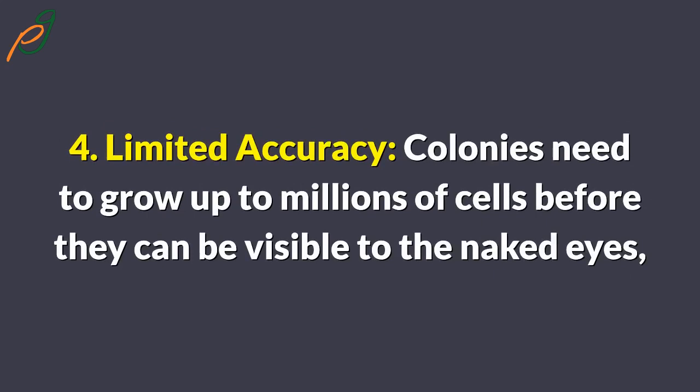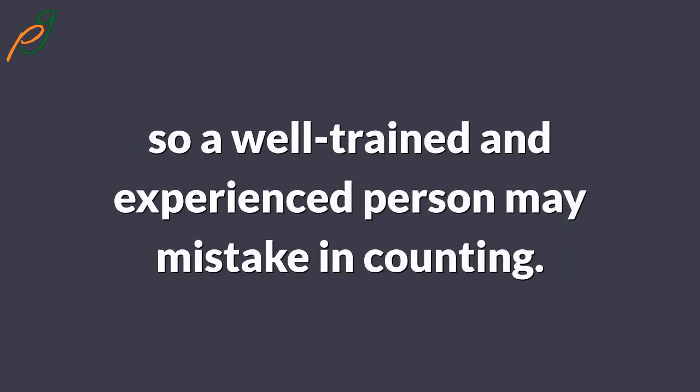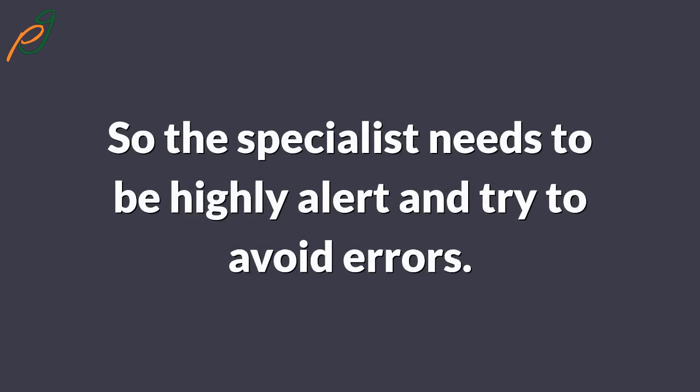Tip 4 — Limited accuracy: Colonies need to grow up to millions of cells before they can be visible to the naked eye. Even a well-trained and experienced person may make mistakes in counting, so the specialist needs to be highly alert and try to avoid errors.